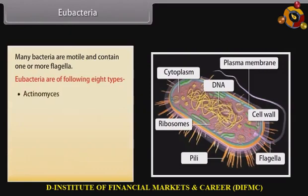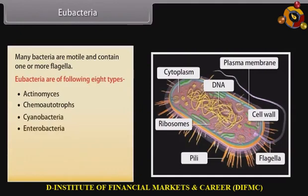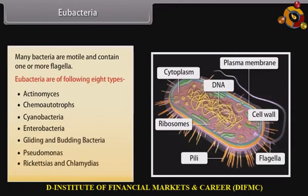Eubacteria are of the following eight types: Actinomyces, chemoautotrophs, cyanobacteria, enterobacteria, gliding and budding bacteria, pseudomonas, rickettsias and chlamydias, and spirochetes.